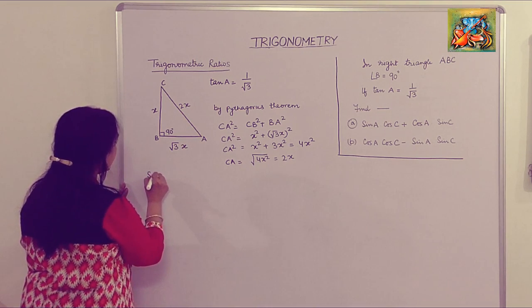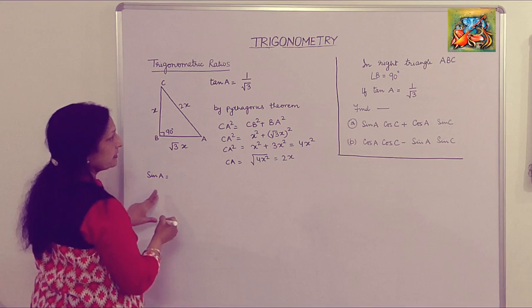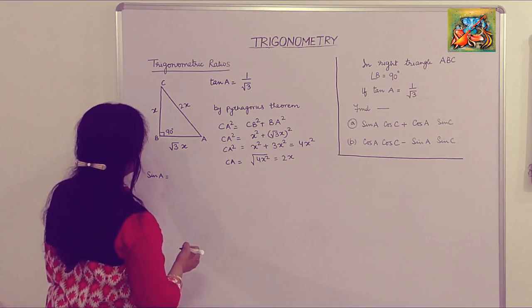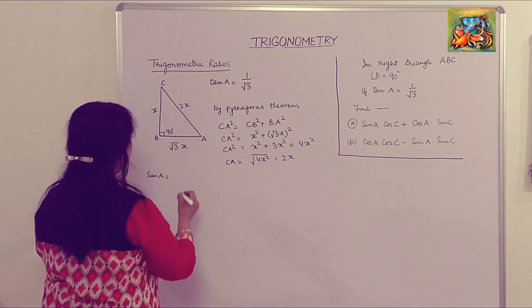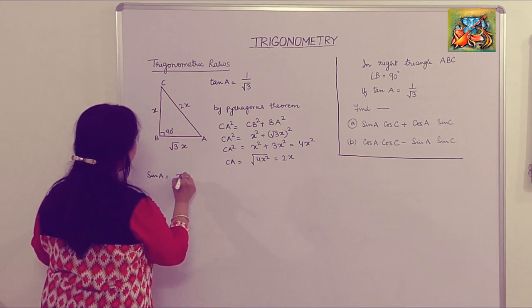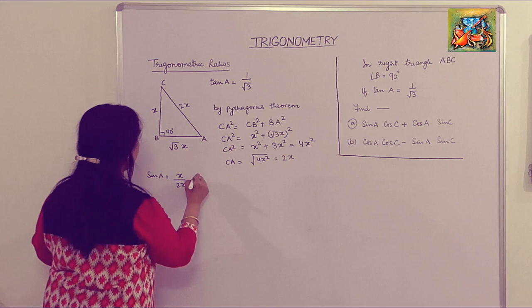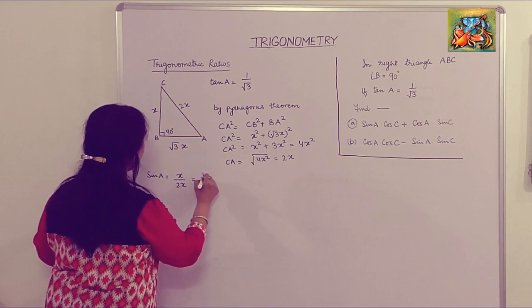Now sin A is equal to perpendicular upon hypotenuse, which means x upon 2x, and that equals to 1 upon 2.